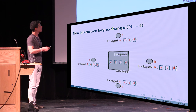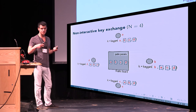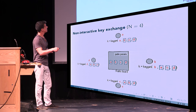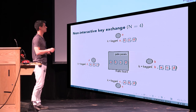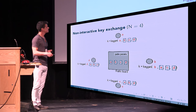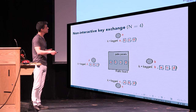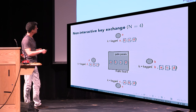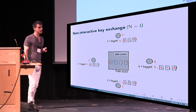Each party can take the three other encodings and their own secret value and apply a key generation procedure. For example, party A takes secret value A and the encodings of B, C, and D and applies the key generation procedure. Party B takes its secret value and the public encodings A, C, and D and applies the same operation. The key thing is that key generation in these four cases gives the same result, so the same key k can be extracted.